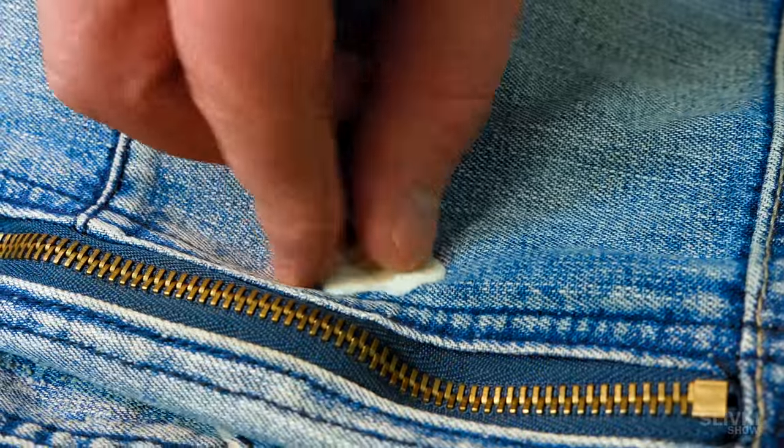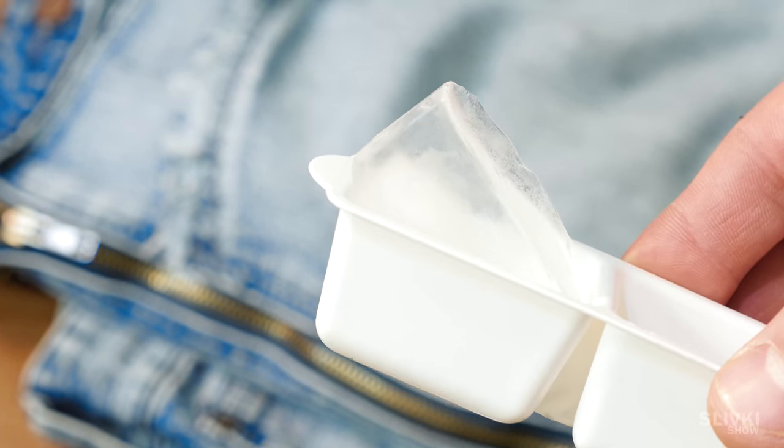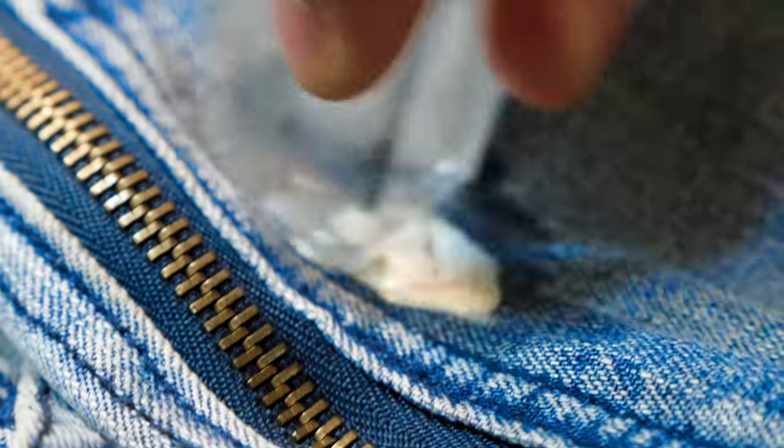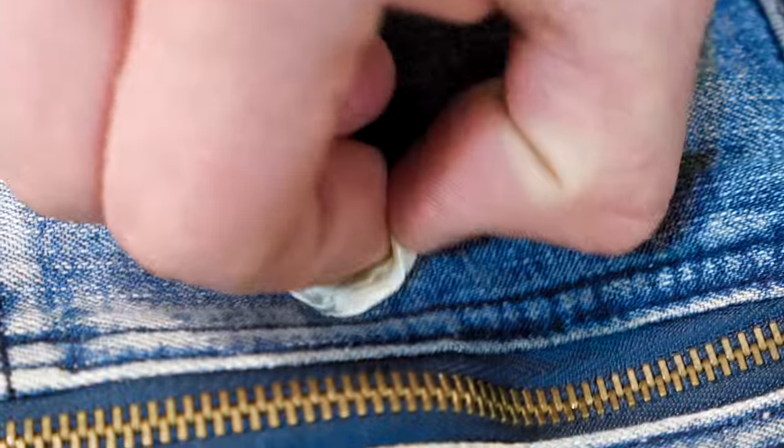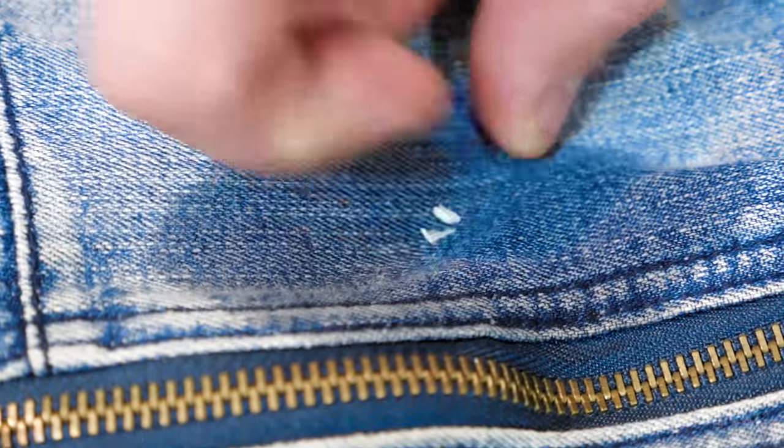If you have chewing gum stuck to your clothes, you will only need an ice cube. Rub the gum with ice first until it has completely hardened and the fabric is soaked with water. After that, the gum itself starts to unstick from the tissue and its removal will not be difficult.